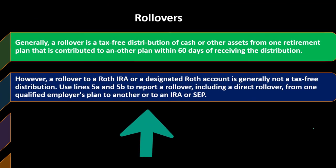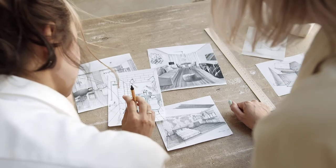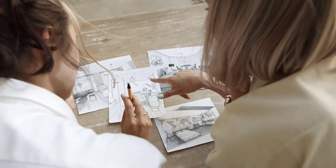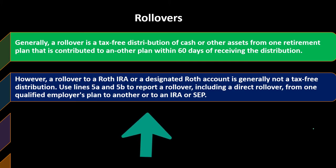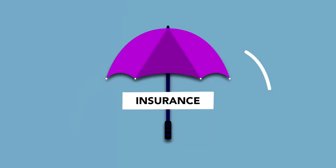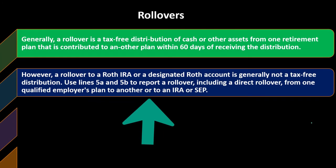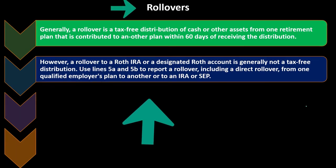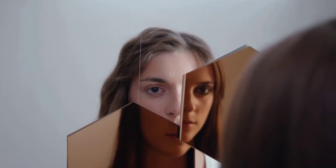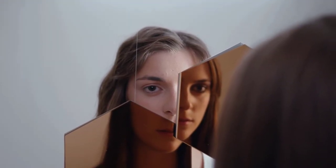However, a rollover to a Roth IRA or designated Roth account is generally not a tax-free distribution. The Roth IRA is the opposite of a traditional IRA — they're reversed. If you're taking money out of a traditional IRA or 401k, where you got the benefit up front and pay taxes at the end, you can't roll it over into a Roth and act like it's the same thing, because it's not the same umbrella.